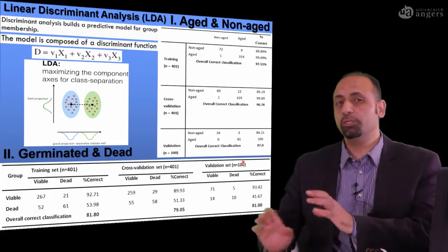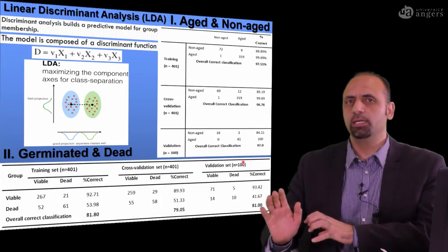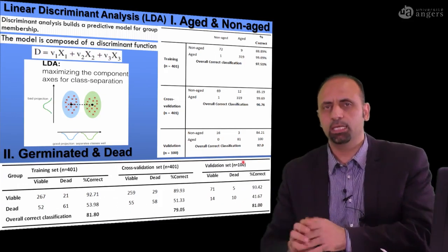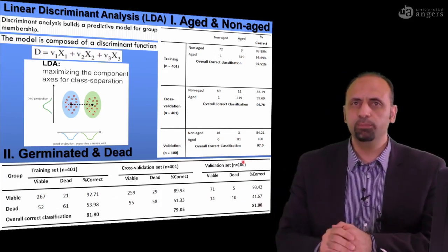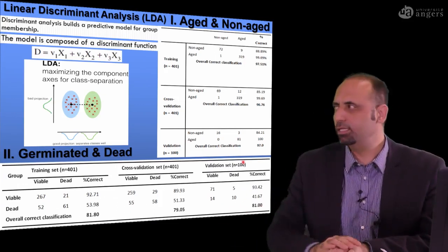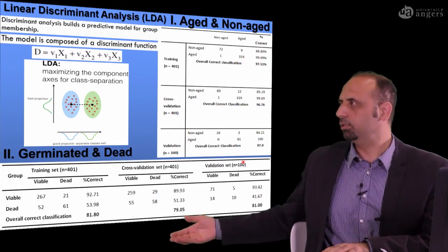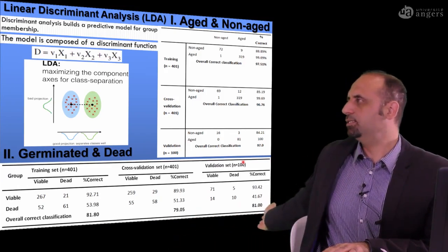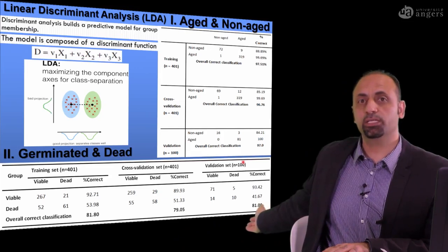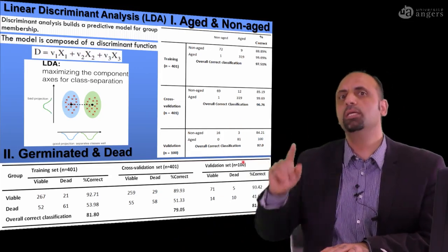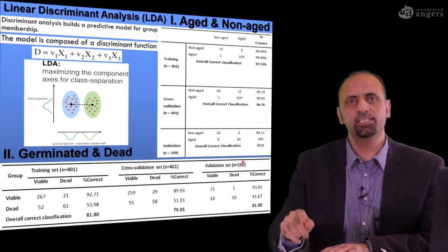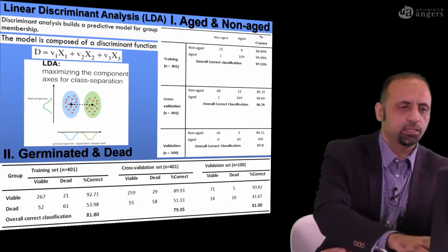To differentiate between germinated or ungerminated, it is alive, the seed can be developed or dead, the seed is already dead. As you see, the accuracy is reasonable, it's still in validation set, it's 81% correct classification, based only in the spectral data we extracted from the original seeds.